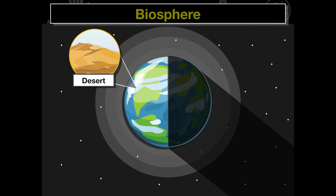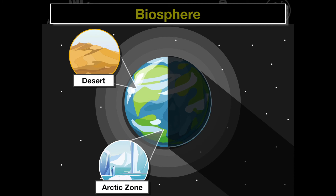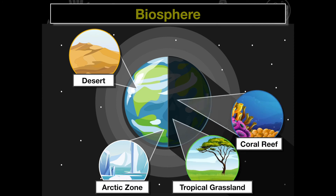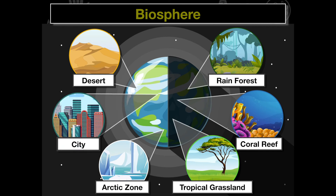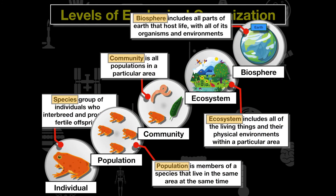Components of the biosphere include deserts, arctic zones, tropical grasslands, coral reefs, rainforests, and even cities where humans live. Each of these environments is considered a biome, and we'll discuss that in more detail. The biosphere is all of these biomes put together to make up earth as one unit. As we study ecology, these levels of organization — individuals, populations, communities, ecosystems, and the biosphere — are fundamental to understanding everything in our ecology unit.